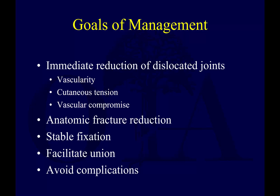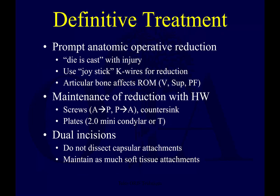The overall goals of management — to be covered in the next video — include immediate reduction of dislocated joints, taking into account vascularity, cutaneous tension, and vascular compromise; achieving anatomic fracture reduction; stable fixation; facilitating union; and avoiding complications — essentially the AO principles. The next videos will cover definitive treatment, surgical management, complications, talar body fractures, and process fractures.